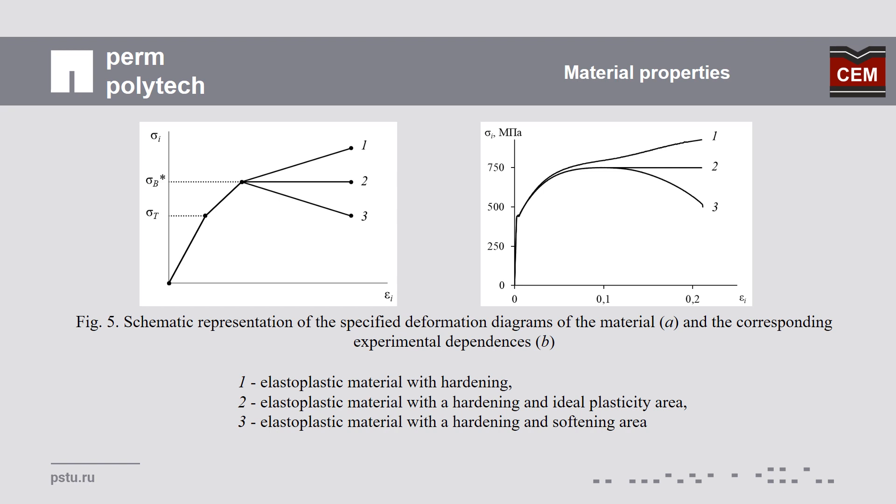In this work, we used three different schemes of material properties: a material with hardening; a material with hardening and an ideal plasticity area; and a material with hardening and a softening area. Here you can see examples of the real stress-strain curves for each case.